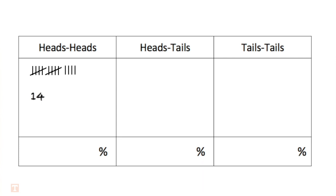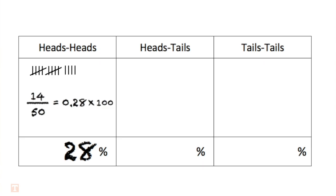Then find the percentage of each combination of tosses. For example, if 14 out of the 50 tosses were heads-heads, to find the percentage divide 14 by 50 and you'll get 0.28. Then multiply that by 100 and that gets 28. This means that 28 percent of the total tosses were heads-heads. Do the same for each total number of tosses for each of the three possible combinations. Once you have your three percentages, double check your answers by adding them all up together. The sum of those percentages should equal 100 to represent the whole set of tosses.